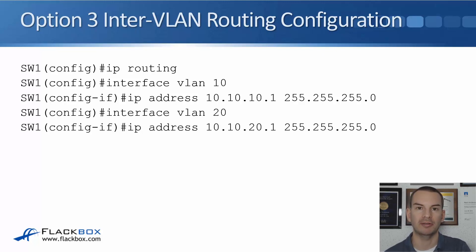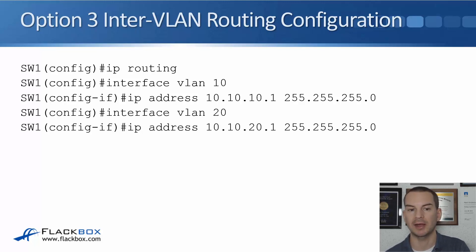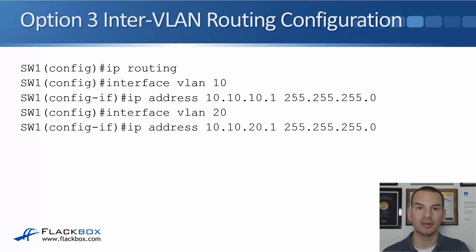This configuration will allow traffic between our ENG and sales PCs on the internal network. At Global Config, first we enable IP routing, then we configure our SVIs. We say interface VLAN 10, IP address 10.10.10.1 with a slash 24 mask, and interface VLAN 20, IP address 10.10.20.1, 255.255.255.0. Once we've done this, the engineering and sales PCs will be able to communicate with each other.